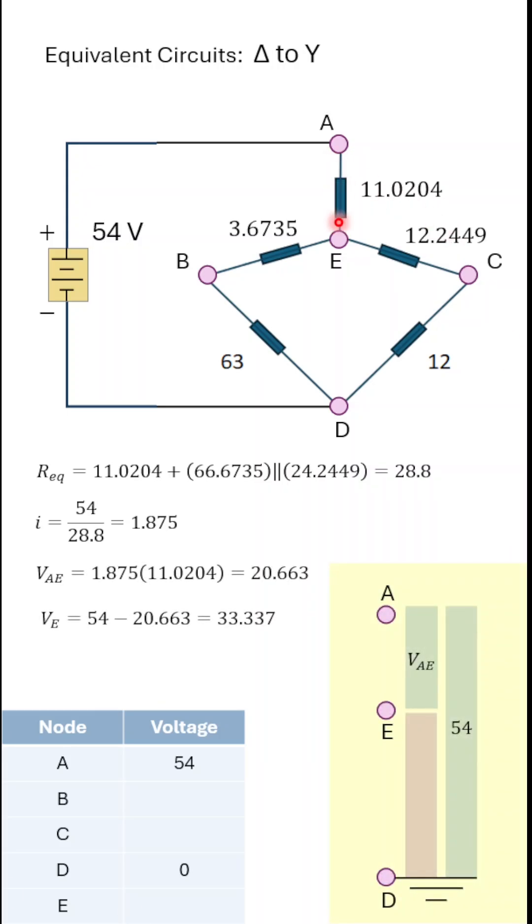With the total current, we can get the voltage drop across 11.02 ohms, and then the node voltage at E. And we'll put that in our table.